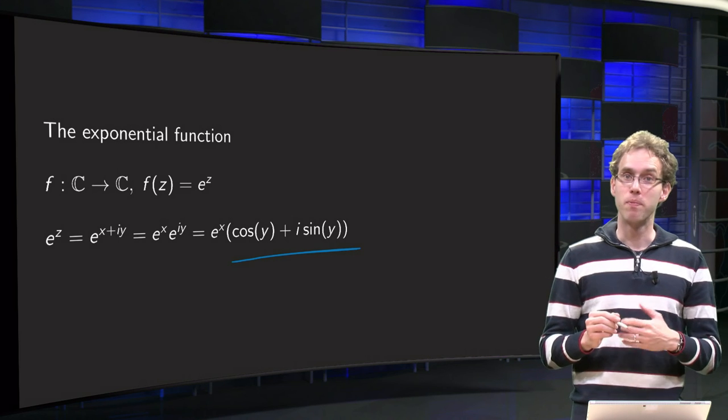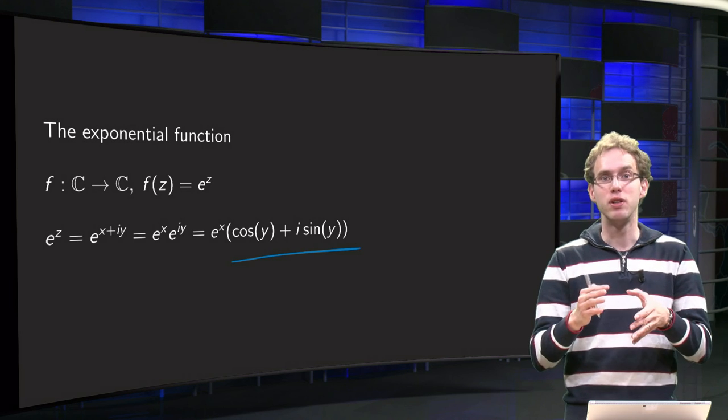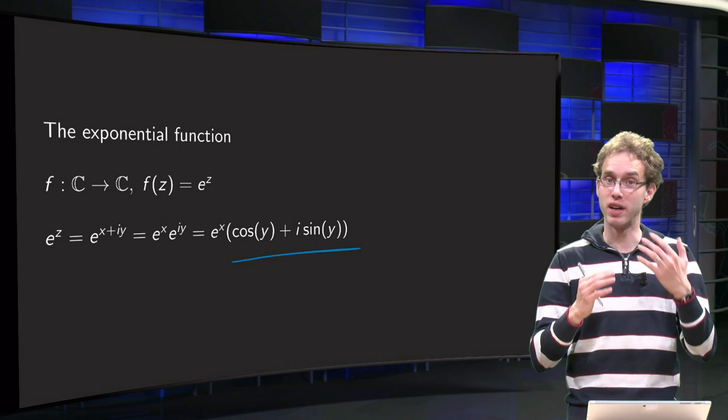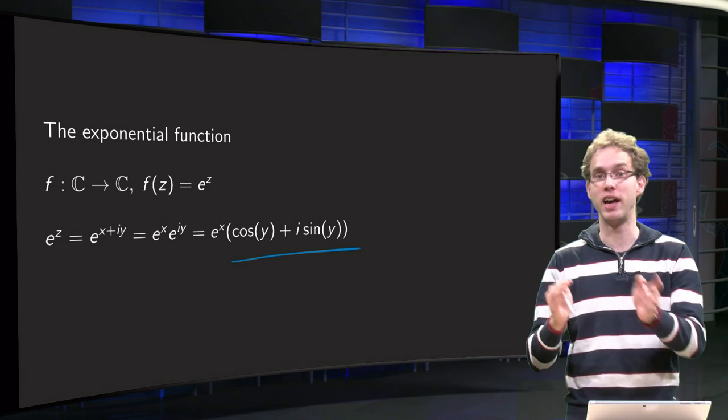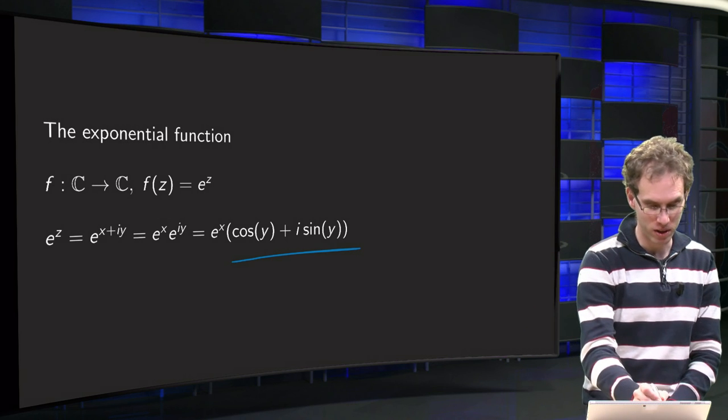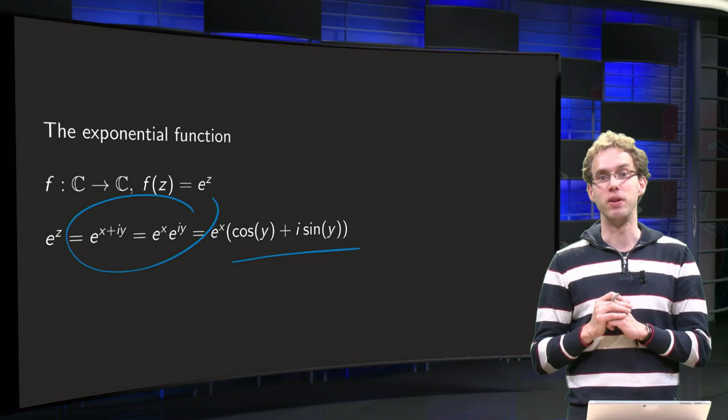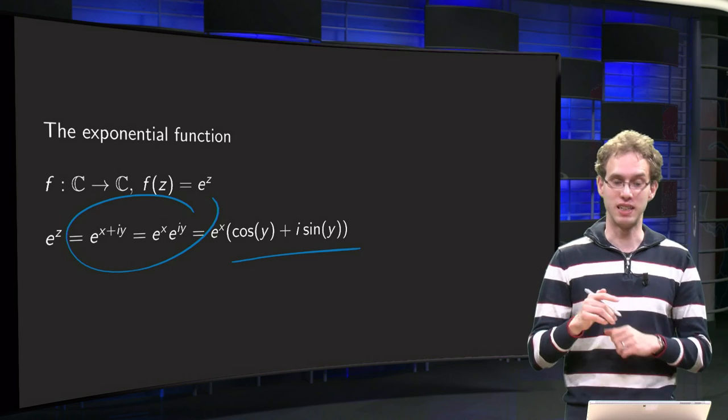We define it like this because we want to keep the rules like we had for real numbers as much as possible, where we had e to the power a plus b equals e to the power a times e to the power b. We want to keep this rule as well when using complex variables. That's why we define the exponential function like this.